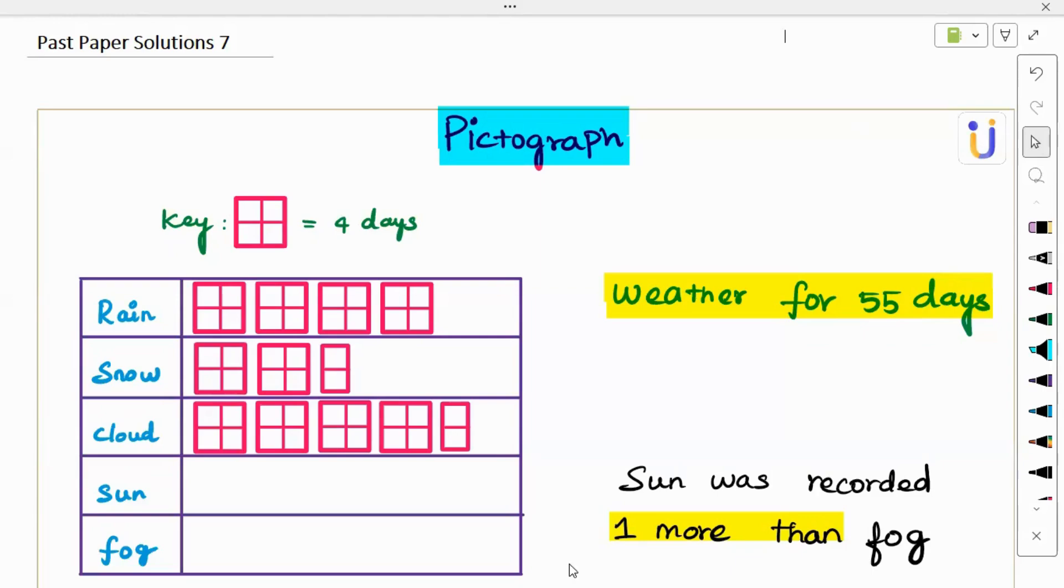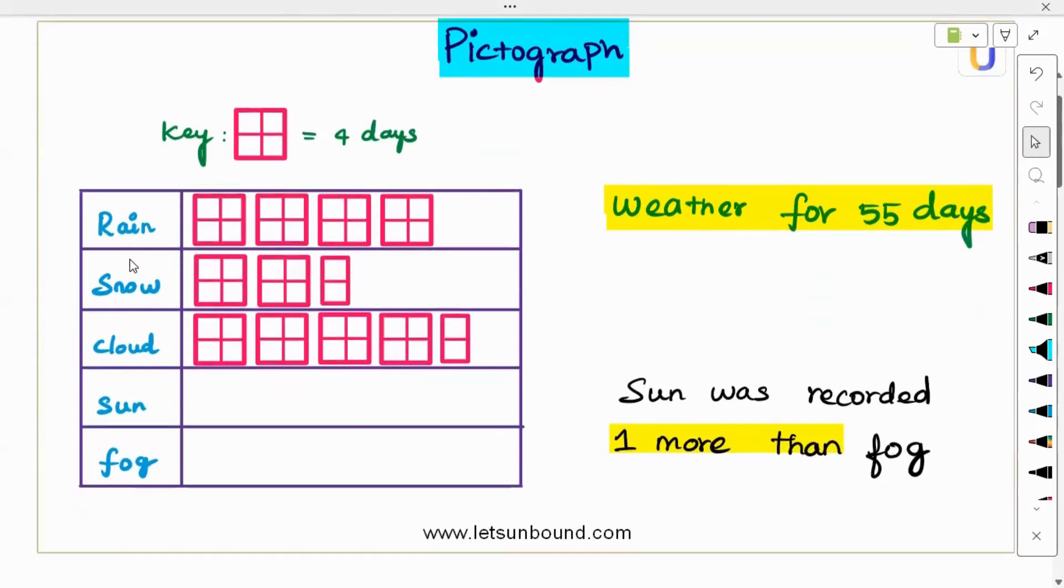First they have given a pictograph which depicts the weather for 55 days. We can see the rain, snow, clouds, sun, and fog. Fog is missing. The aim is to fill and complete the pictogram for sun and fog. One more keyword is given here: sun was recorded one more than fog. This is the clue we have.